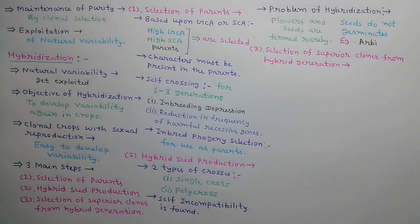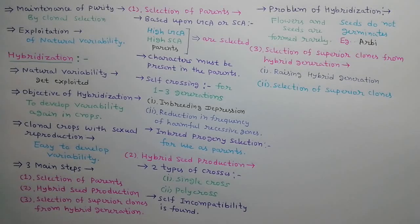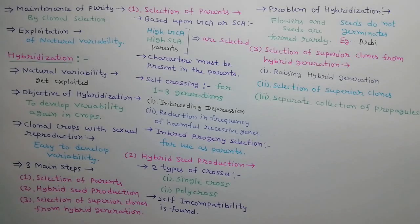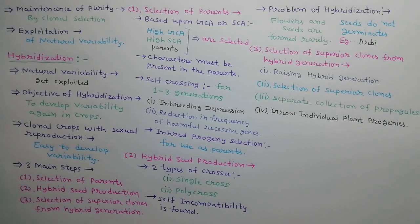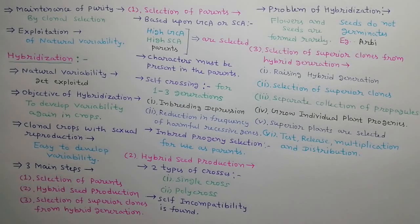The third step is selection of superior clones from hybrid generation. F1 generation is produced by growing hybrid seeds; this generation is called hybrid generation. Now superior F1 plants are selected. Propagules from selected plants are collected separately and used to grow individual plant progenies. Now superior clone plants are selected. Test, release, multiplication and distribution are the further steps.